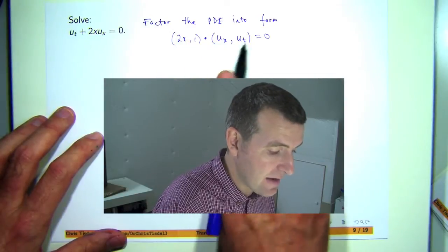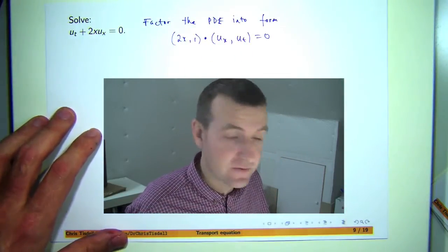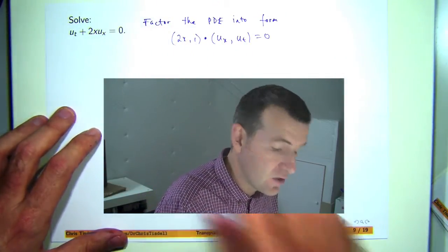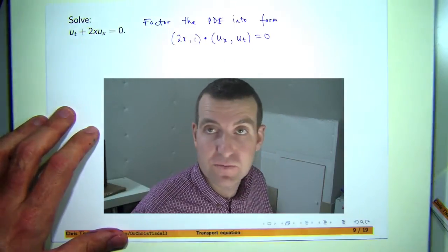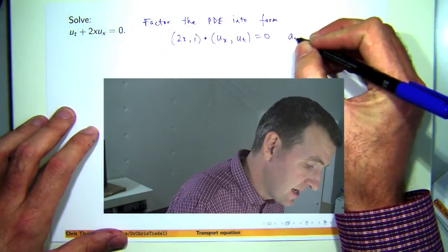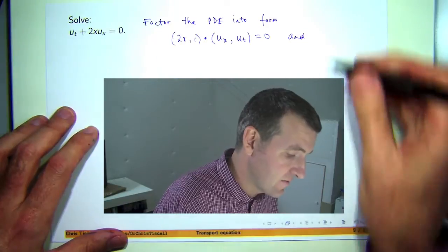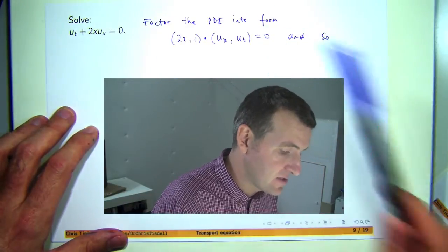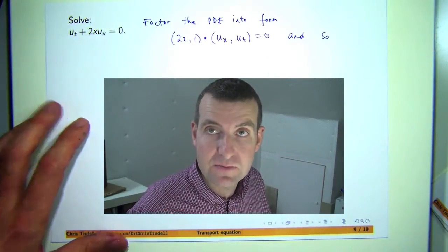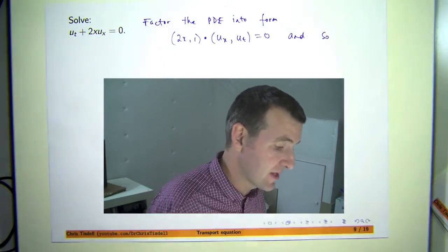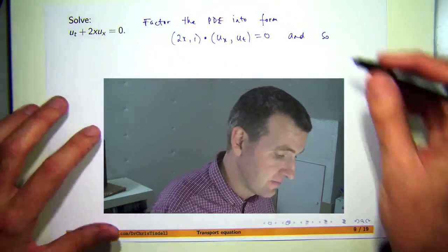And this is almost a dot product. Here we have the gradient or grad of u, and if this was a unit vector, then the whole thing would be the directional derivative. Now, this isn't necessarily a unit vector, but because I have zero on the right-hand side, I can multiply through by 1 divided by the length of this and I'll get the following.